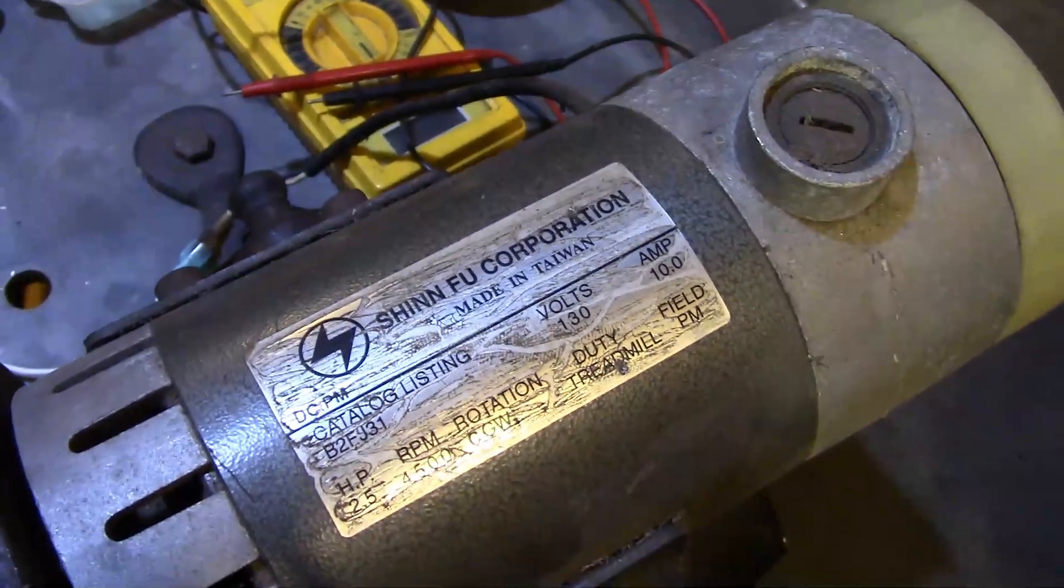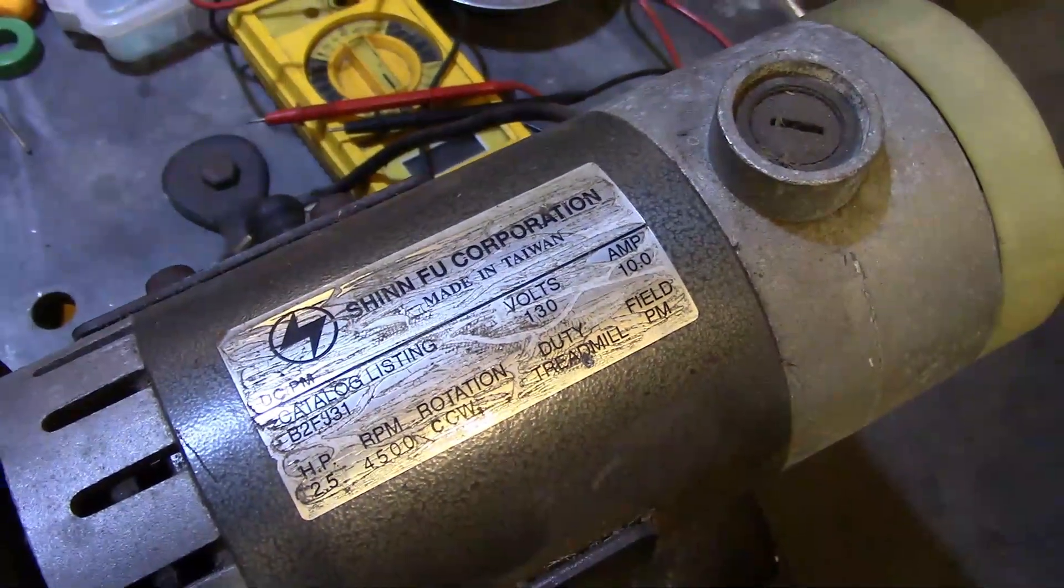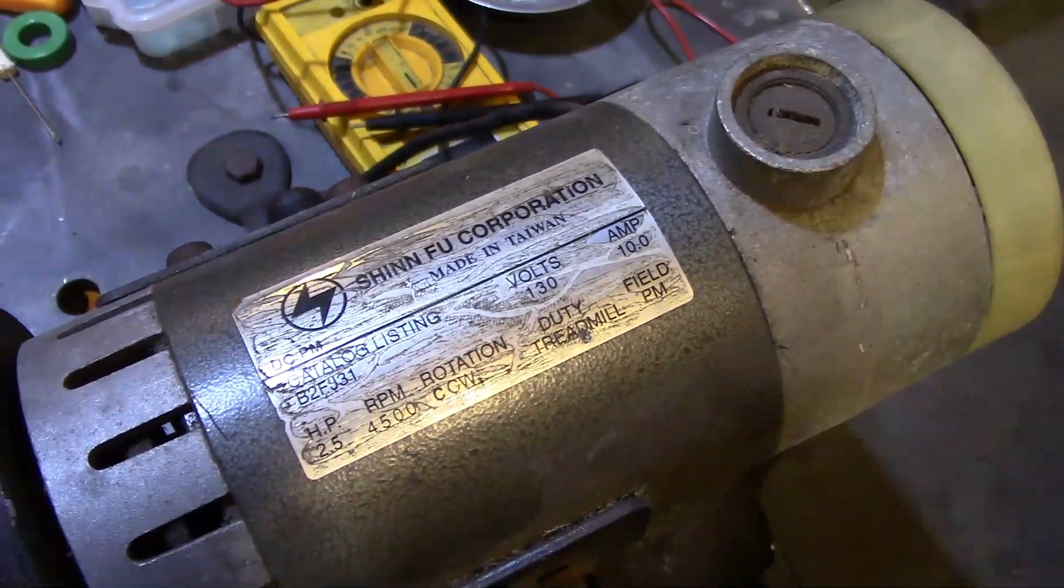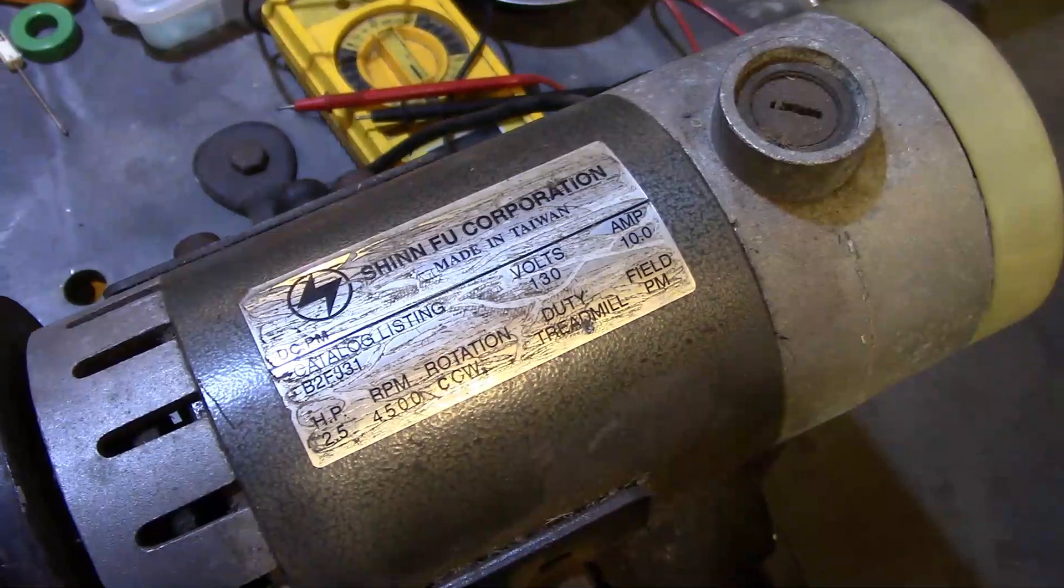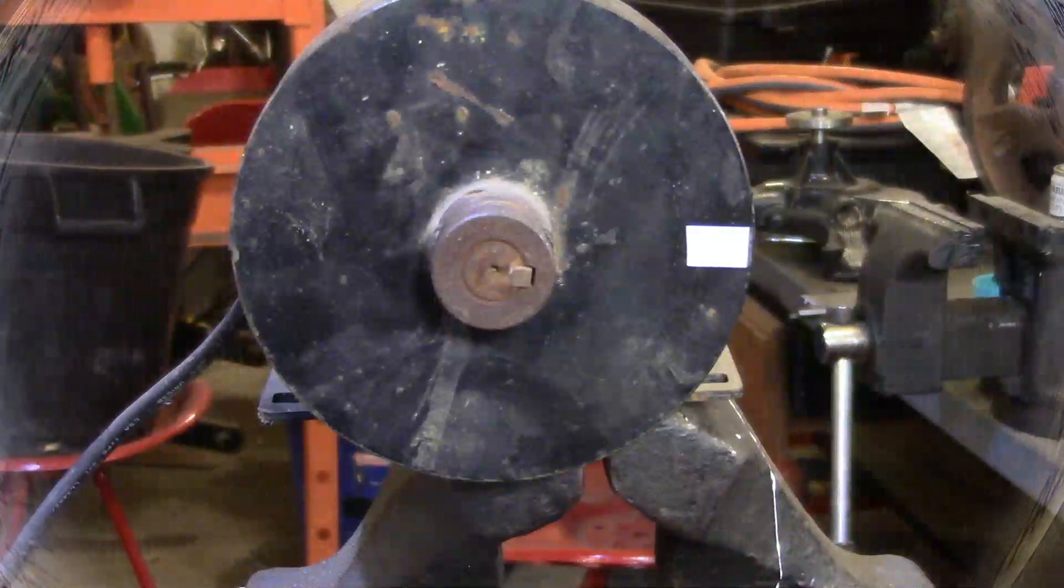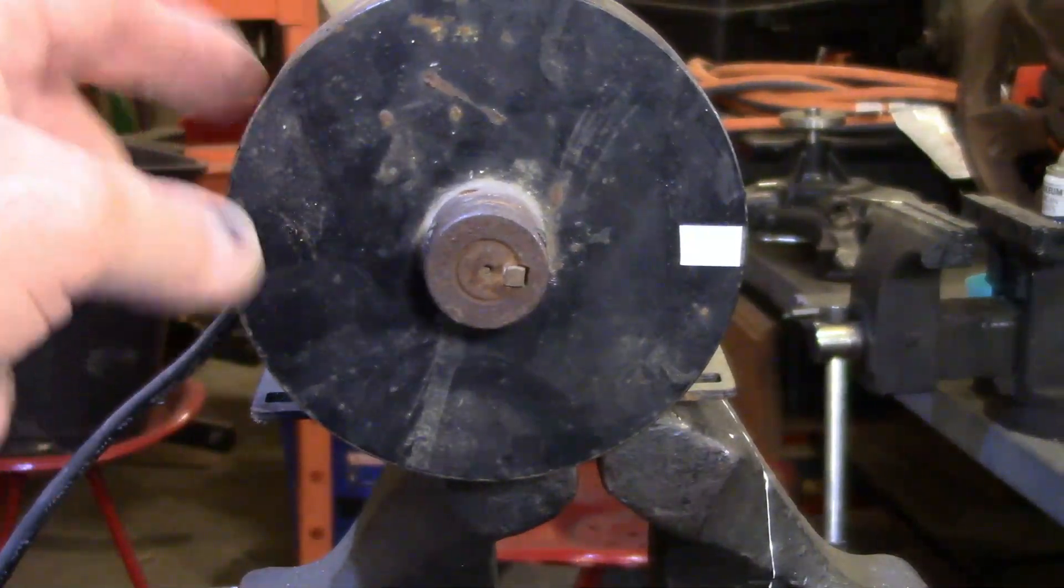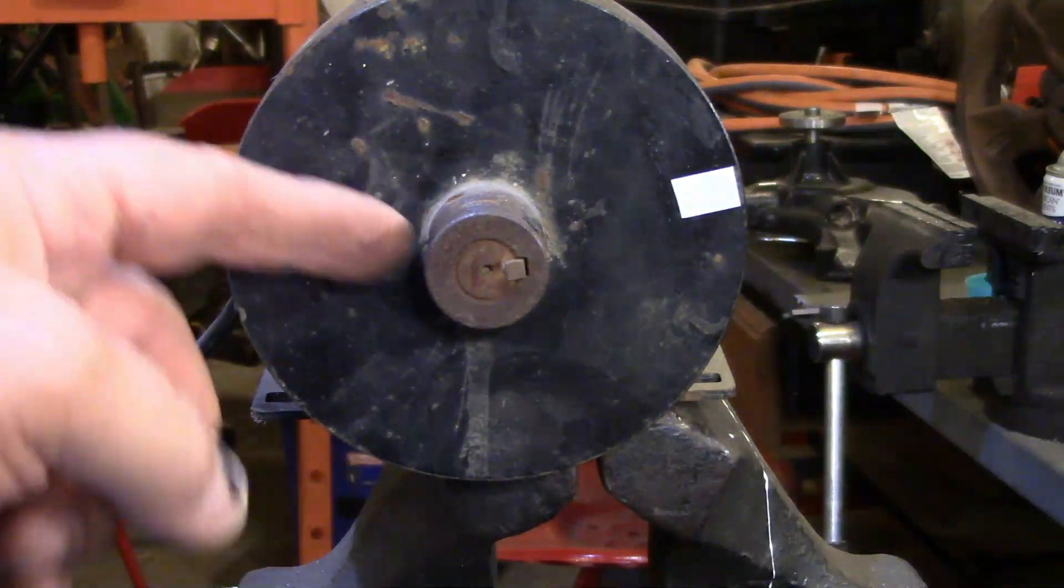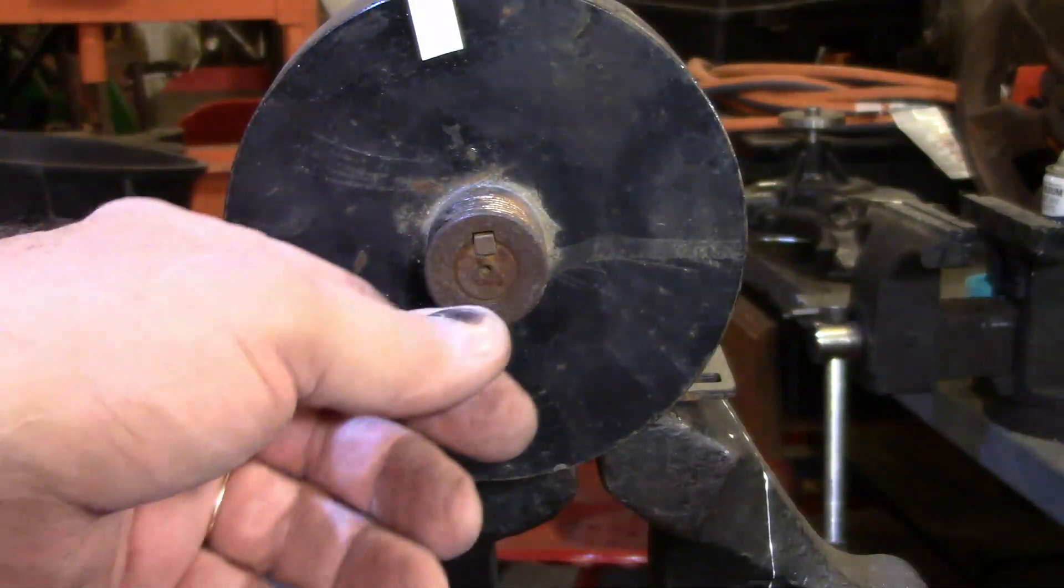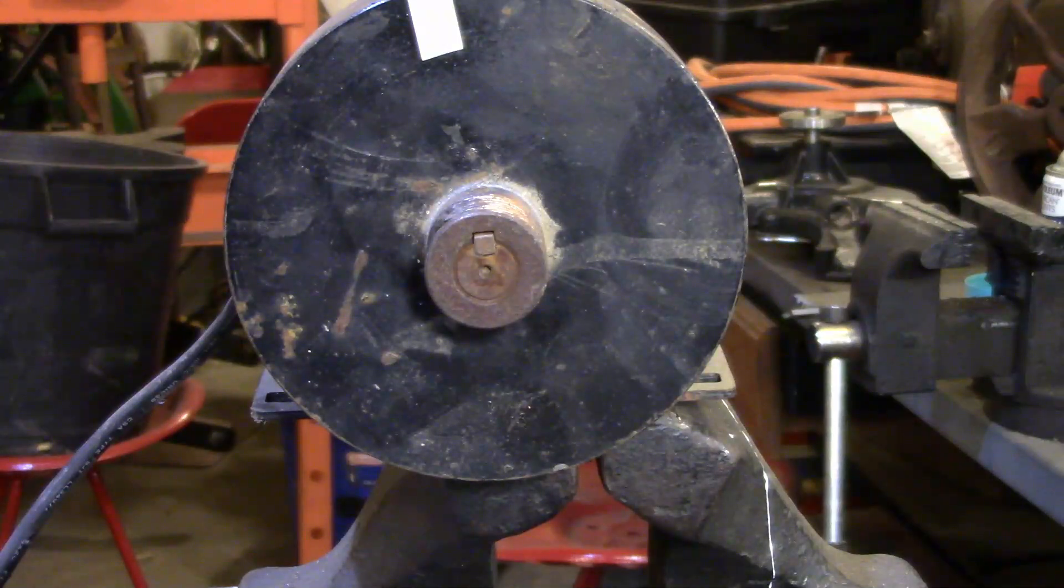Well here's a shot of the motor. It is 130 volts and it is a counterclockwise rotation, two and a half horsepower. Something that I liked about this motor: this flywheel is put on with a set screw and a keyway, so I'll be able to get this off depending on what project I use it on.